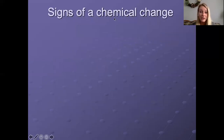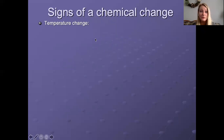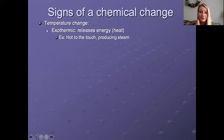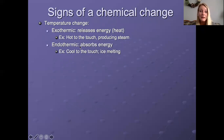When there is a chemical change, we're going to see some indicators. The first one is a temperature change. There are two types: exothermic, which means heat is released — think of a fire, which is an exothermic chemical change releasing heat — and endothermic, which absorbs heat and will feel cold to the touch. Things like ice packs or ice melting are considered endothermic.